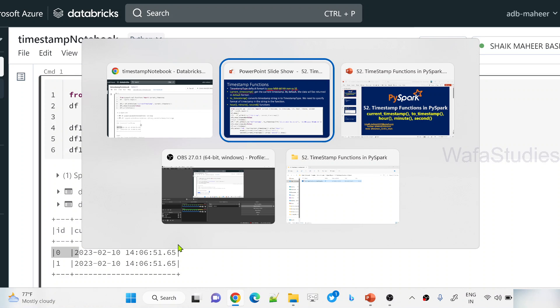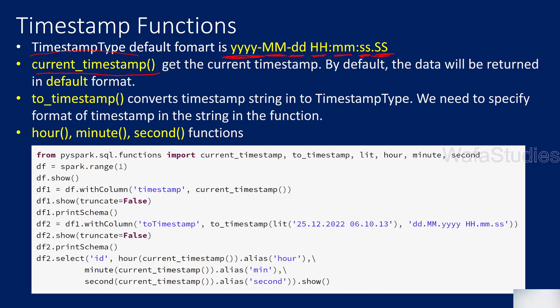Now let's go to the presentation. There is a second function called to_timestamp. What it does is convert any string into timestamp type, but that string should have some date and time information, and you have to specify in which format that string has it.